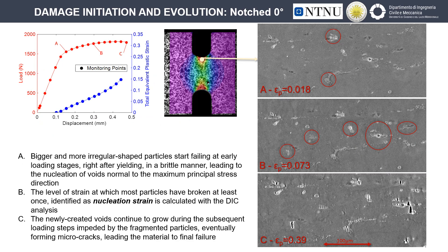Using SEM in-situ techniques, we monitored the behavior of these particles on the surfaces of the different tested geometries, and evaluated local strain evolution in the monitoring points using DIC techniques. These particles start breaking in a brittle manner very early during the loading process. Usually, the particles that break first are those with a bigger and more irregular shape, which have a higher stress concentration around them. As the load increases, more particles start to break, and we identified as nucleation strain the strain at which most particles had broken at least once. The newly created voids continue to grow and eventually form micro-cracks, leading to material failure.